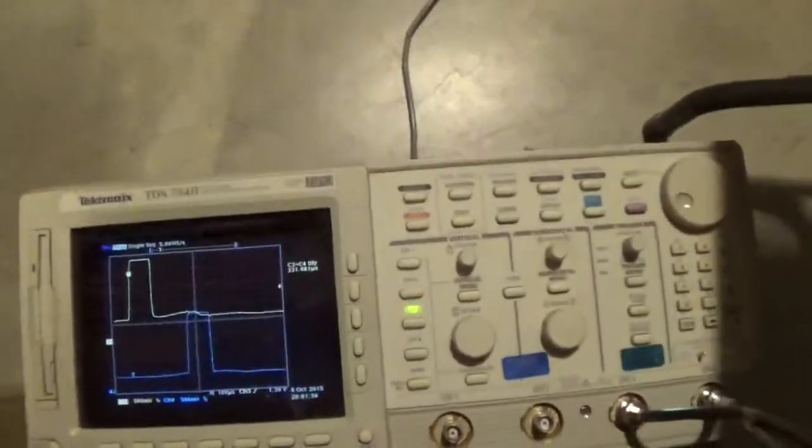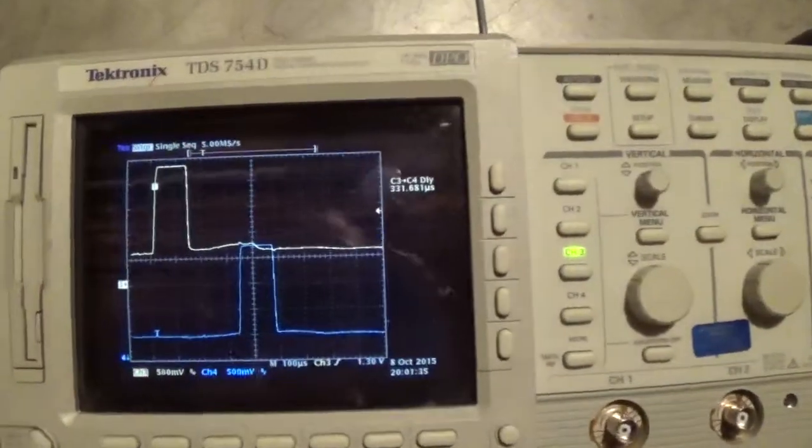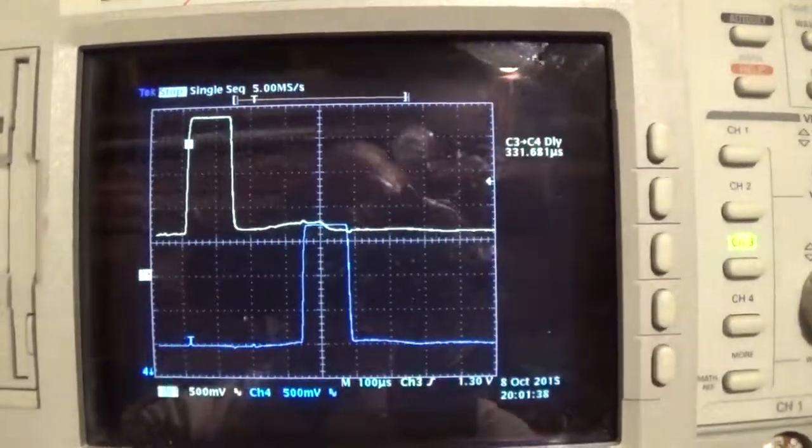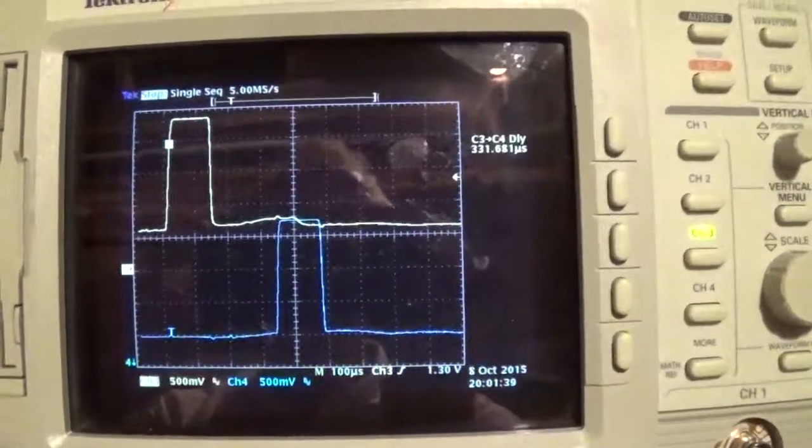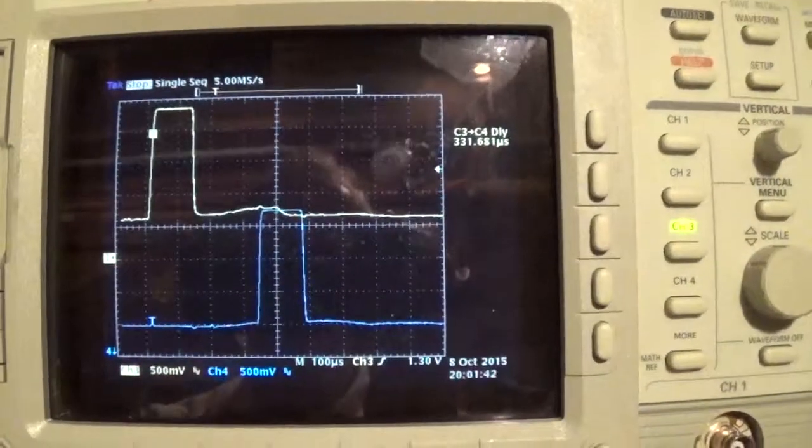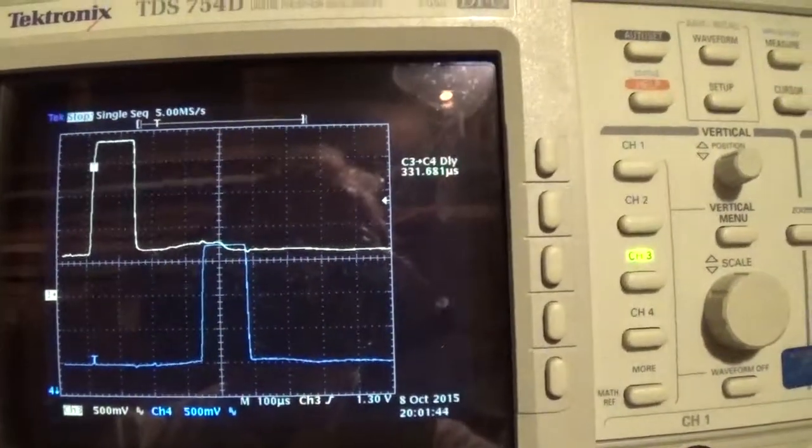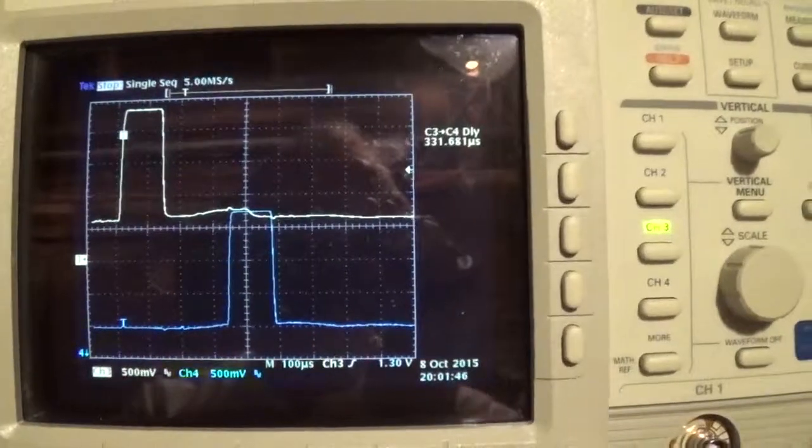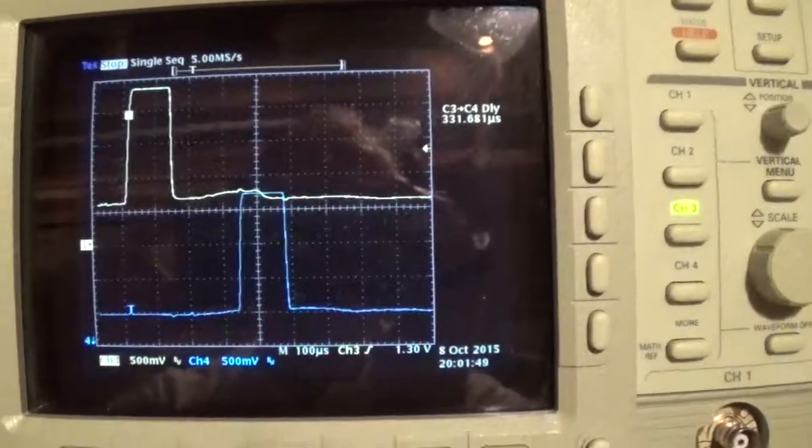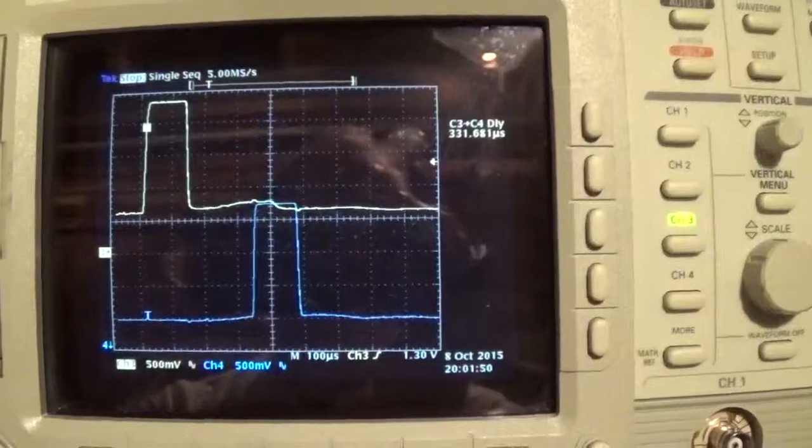And then we'll look at the oscilloscope to see how fast it went. So there's the two pulses on the oscilloscope. Show the distance for 100 millimeters. And that is, what, 331 microseconds? So just a hair over 300 meters per second.